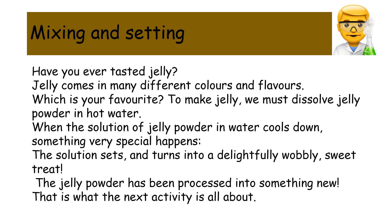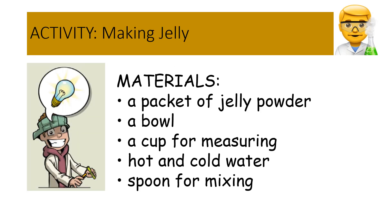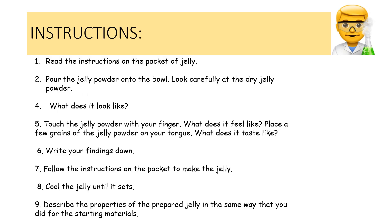The jelly powder has been processed into something new. For the activity, the materials you will need are: a packet of jelly powder, a bowl, a cup for measuring, hot and cold water, and a spoon for mixing. Instructions: read the instructions on the packet of jelly, pour the jelly powder into the bowl and look carefully at the dry jelly powder. What does it look like? Touch it with your finger — what does it feel like? Place a few grains on your tongue — what does it taste like? Write your findings down, then follow the instructions to make the jelly.